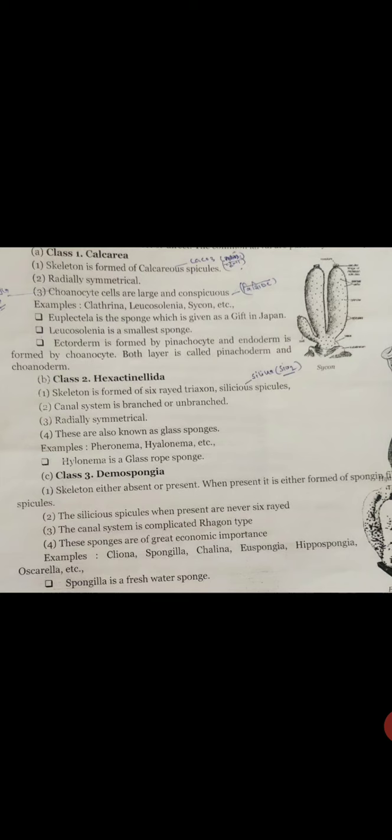Now moving on to the third class: Demospongia or demosponge. These are small to large size, solitary or colonial. Skeleton may be absent or present. When present, it is made of siliceous spicules, meaning made of silica.